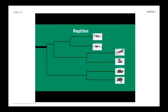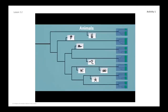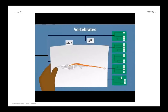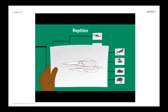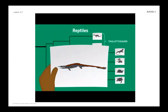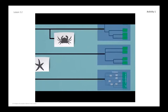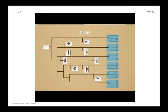When paleontologists find a diagnostic structure on a fossil, they can make inferences about what other group of species it shares ancestry with. This helps them figure out where the fossil belongs on the evolutionary tree. But diagnostic structures are not always obvious — they may just be little changes to existing structures, as simple as a small ridge on the edge of a bone. Now let's try to identify this unknown fossil using diagnostic structures.